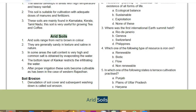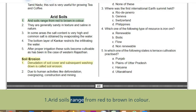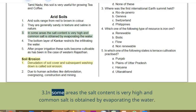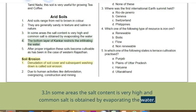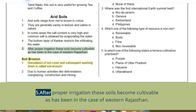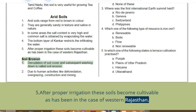Arid soils range from red to brown in colour. They are generally sandy in texture and saline in nature. In some areas the salt content is very high and common salt is obtained by evaporating the water. The bottom layer of kankar restricts the infiltration of water. After proper irrigation these soils become cultivable, as has been the case in western Rajasthan.